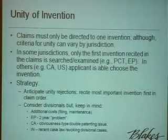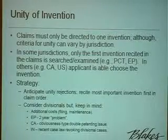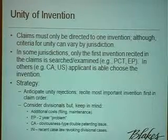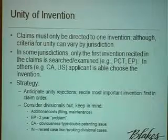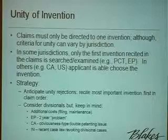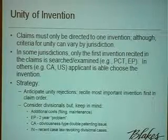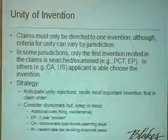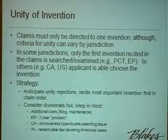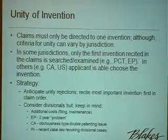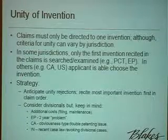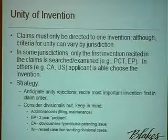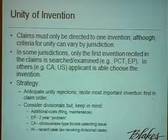In Canada, we have another problem with respect to obviousness-type double patenting. This prohibition also exists in the U.S., but unlike the U.S., we don't have a terminal disclaimer practice. So if you have a divisional application directed to an obvious invention over the parent case, the divisional patent, once issued, could potentially be invalidated as being obvious. The way to get around that is to draw a restriction requirement from an examiner, which essentially insulates you from that type of attack. So the advice is to put all your claims in, present them to the examiner, draw the restriction requirement, and you're free from the obviousness-type issue.